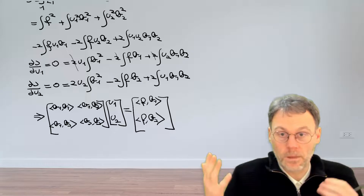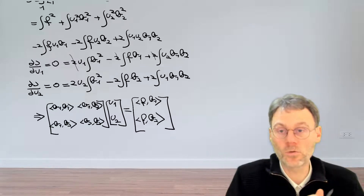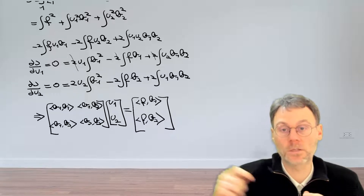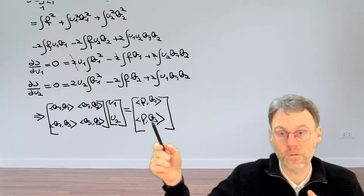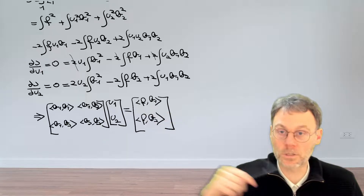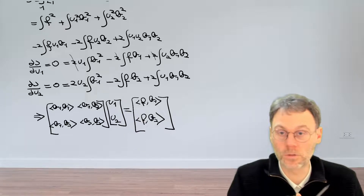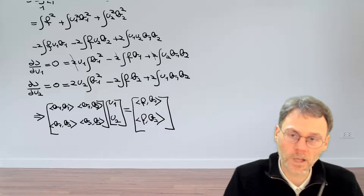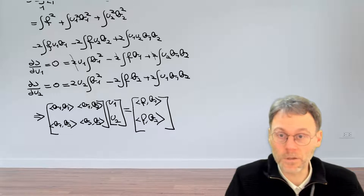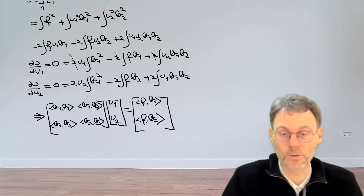In general, we have solved the problem. What we now need to do is plug in the particular values of f, b1, and b2 for our case, calculate all of these scalar products, and then calculate u1 and u2. It's not a difficult calculation, but it's slightly painful. Pause the video, roll up your sleeves, and do the calculation.